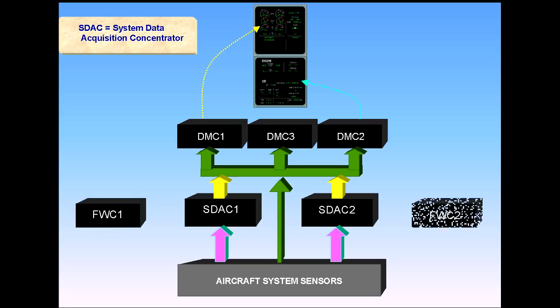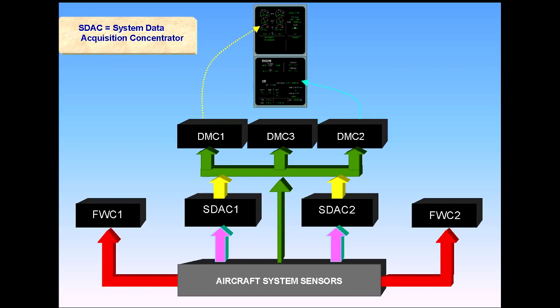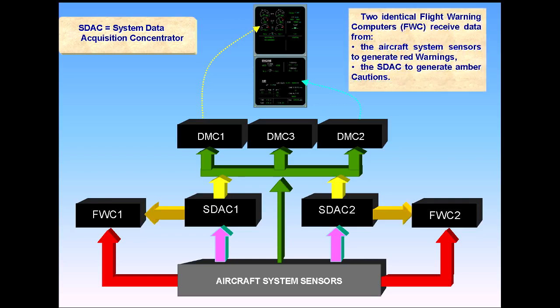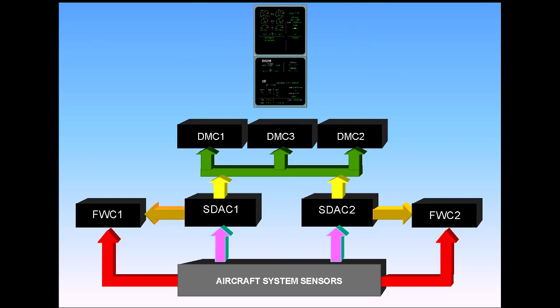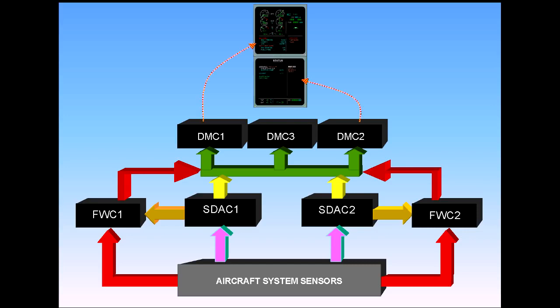Two identical Flight Warning Computers, FWCs, receive data from the aircraft system sensors to generate red warnings, and from the SDACs to generate amber cautions. The FWCs then supply the DMCs for the display of alert messages, the attention getters, the loudspeakers for aural alerts, and synthetic voice messages.